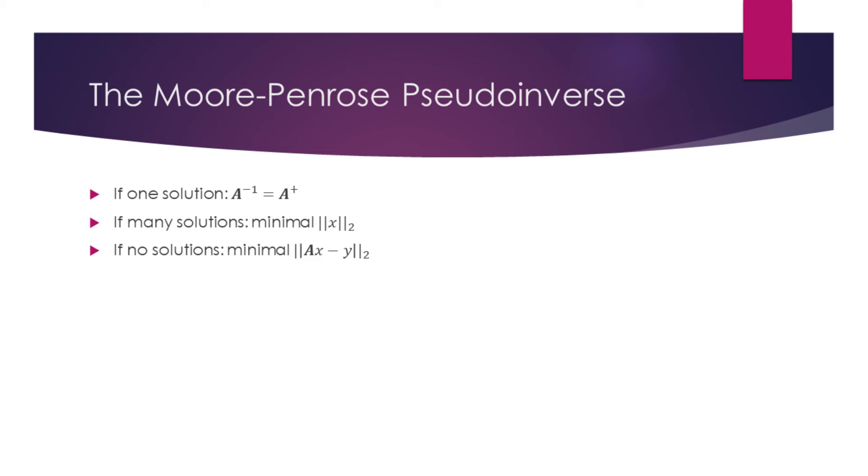If A has more rows than columns and there are no solutions, with pseudoinverse we'll find x for which y is as close as possible to Ax.